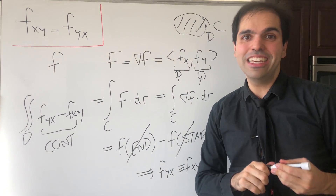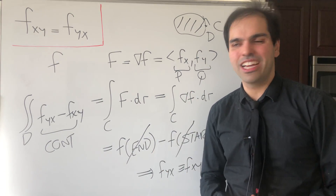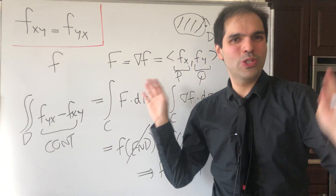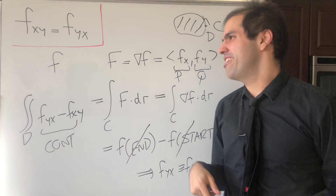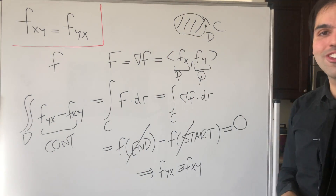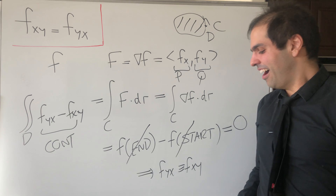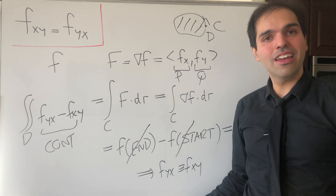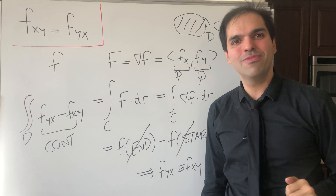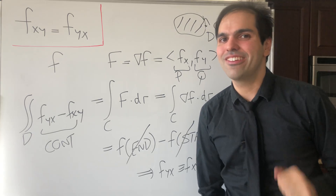So tell me in the comments: which proof did you like more — the difference quotient proof, the integration proof, or the Green's theorem proof? I hope you liked this. If you want to see more math, please make sure to subscribe to my channel. Thank you very much.